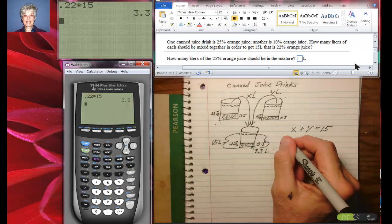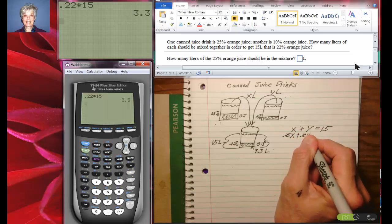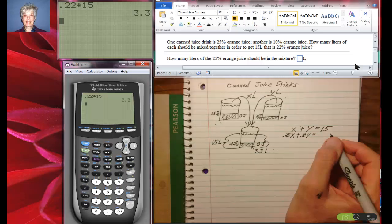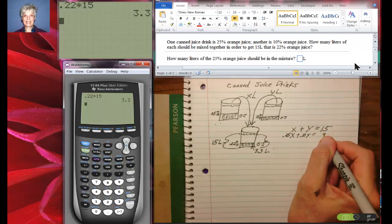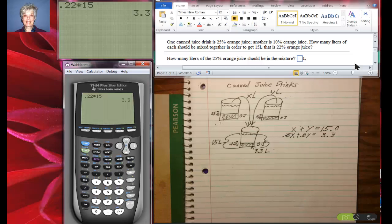So it'll look like this. 25% of this x liters plus 10% of this y liters is going to equal the orange juice at the end, which is 3.3. So let's put a 0 here. And those are our two relationships right here.